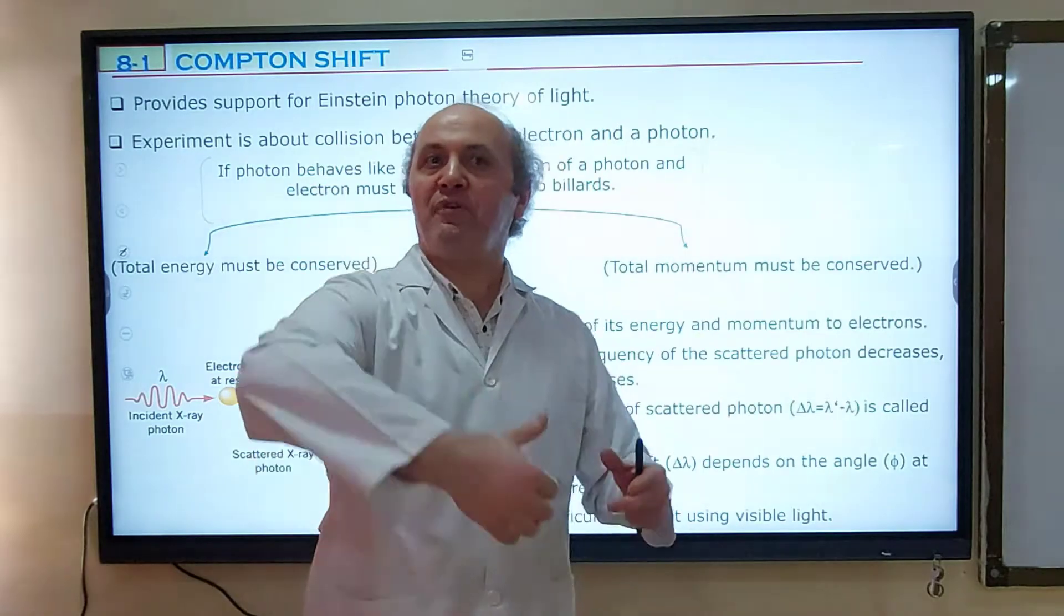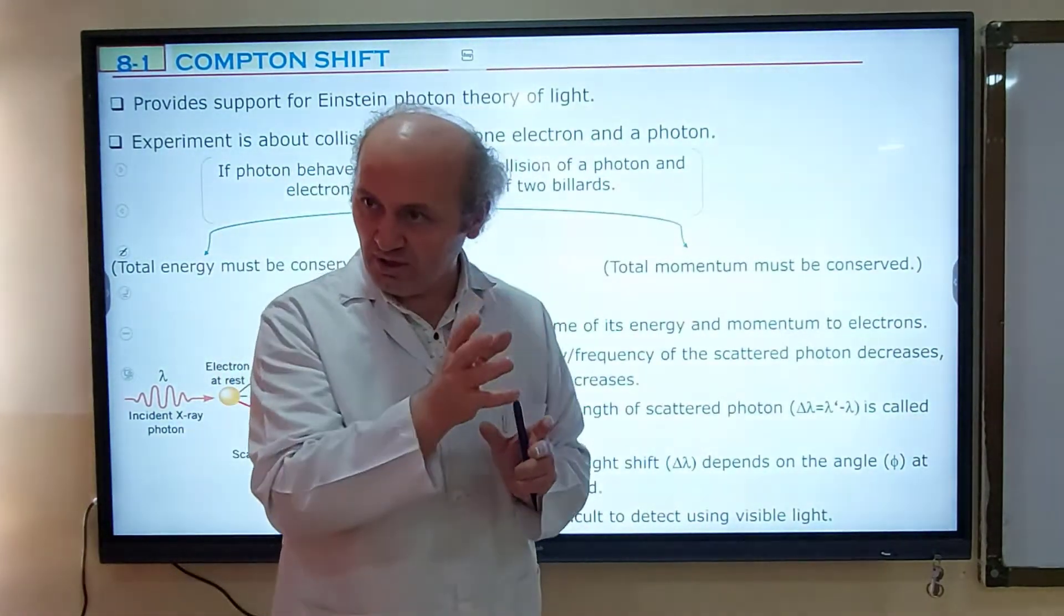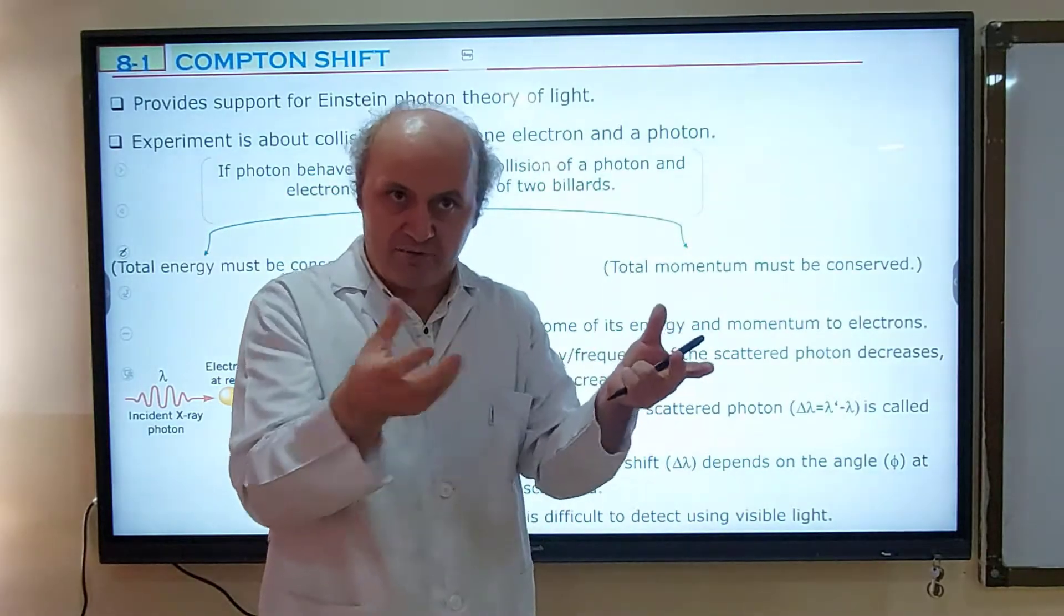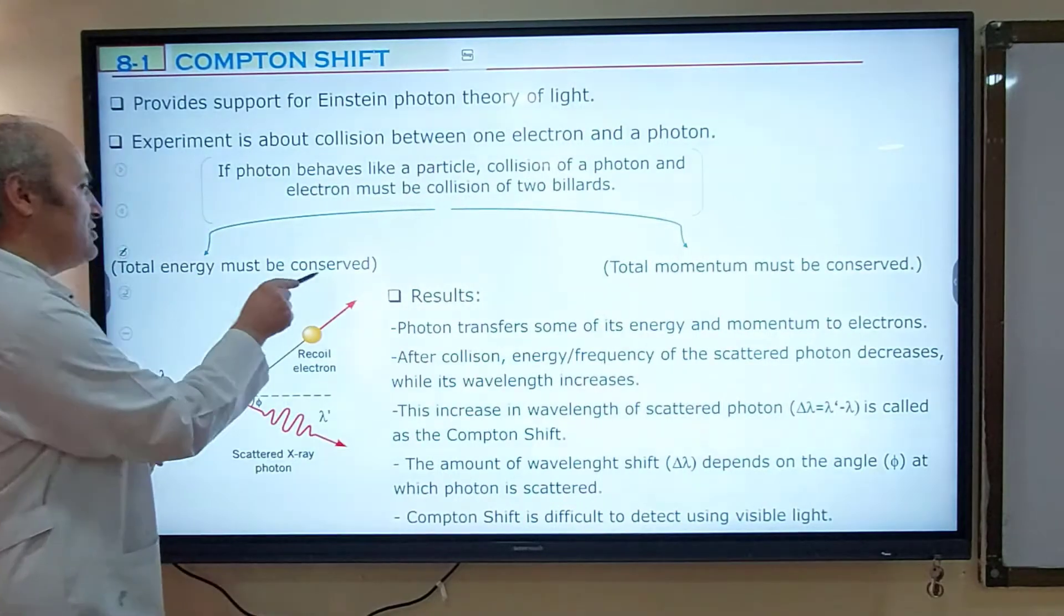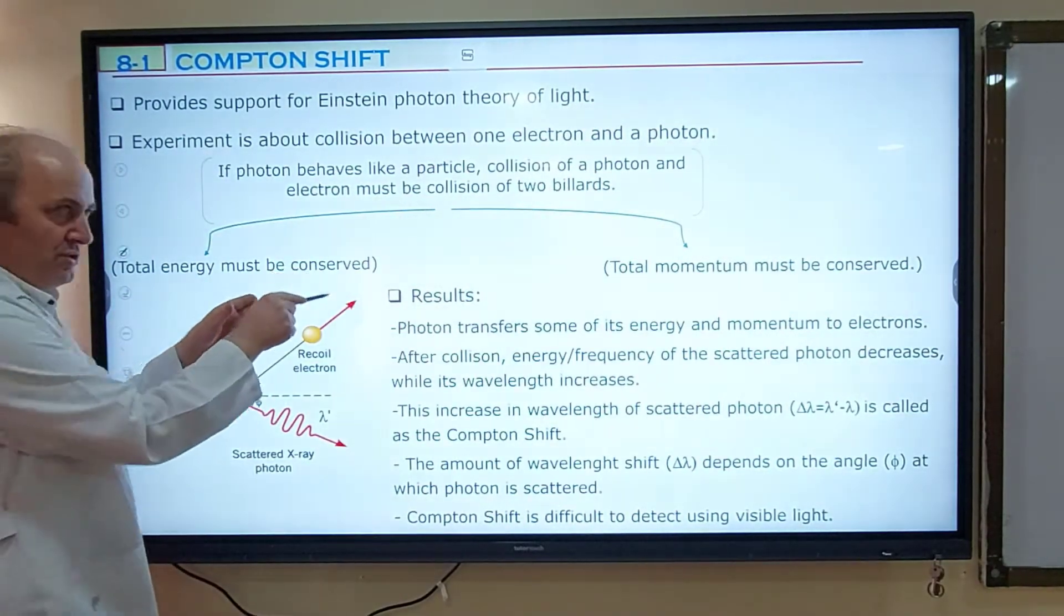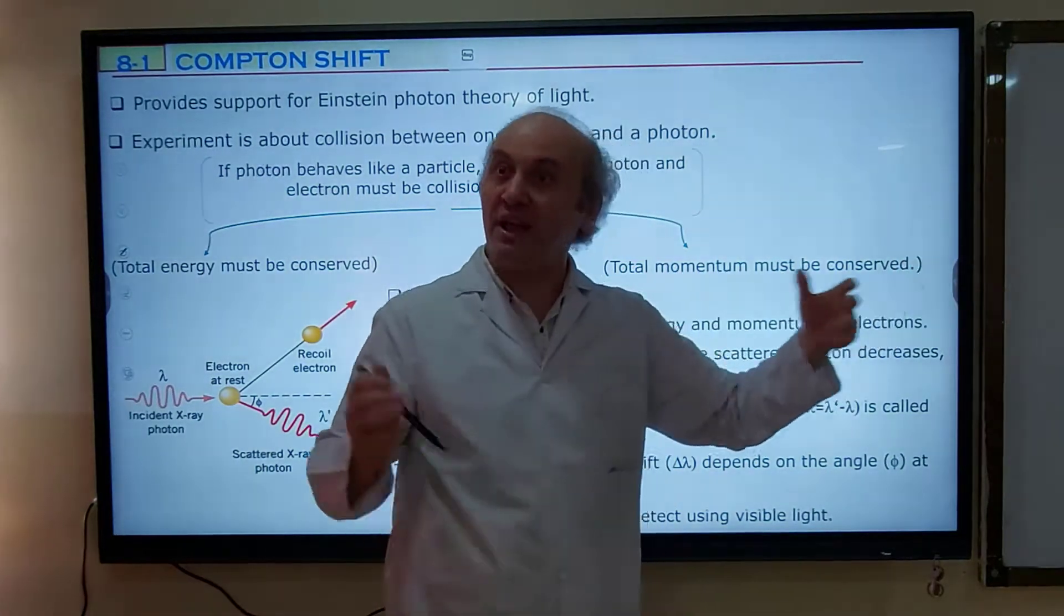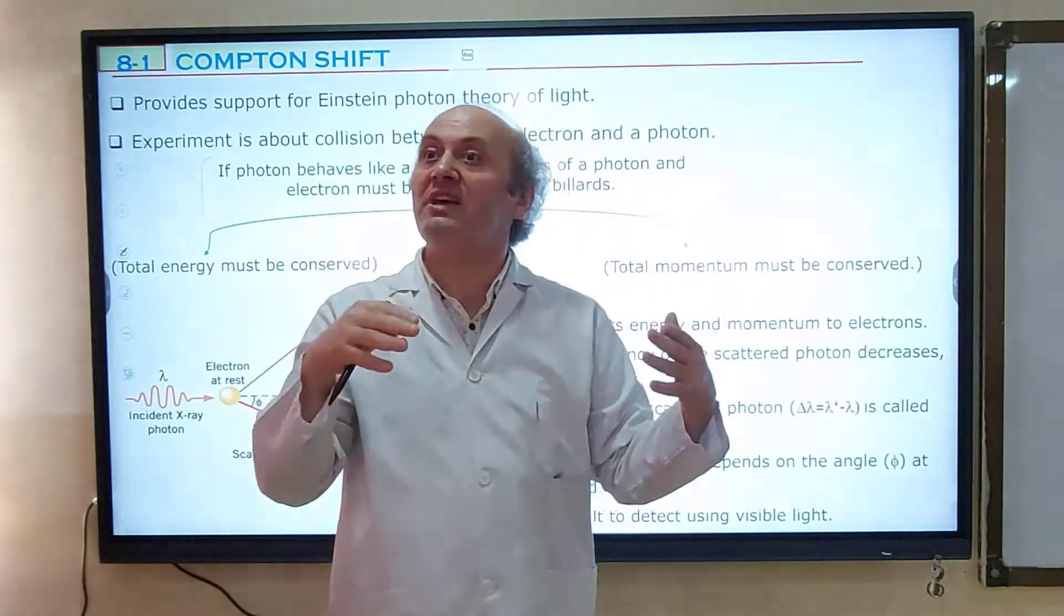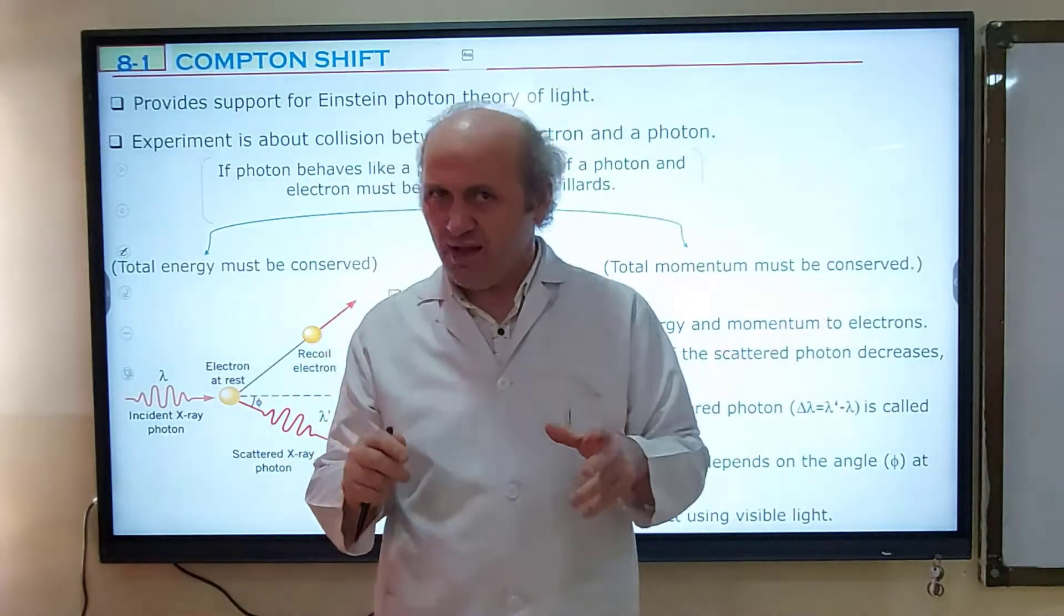Second one is, before the collision, how much kinetic energy the system has? After collision, the system, these particles together will have the same amount of kinetic energy. So total energy must be conserved. Total momentum must also be conserved if this collision is elastic collision between the photon and electron.